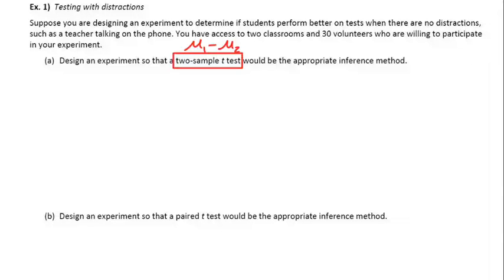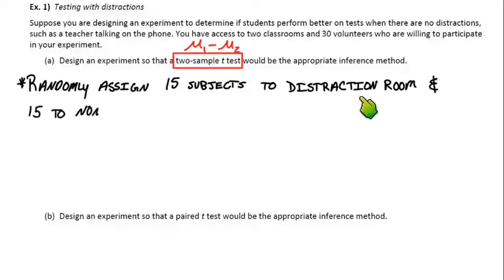Okay, so the most basic way to design this experiment would be to split up these 30 volunteers randomly into the two treatment groups. So we could say randomly assign 15 subjects to the distraction room and 15 to the non-distraction room.